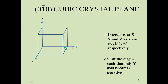Drop the origin to a new position such that the y-axis only becomes negative. When you move from this corner in this direction, this is the negative y-axis direction; this is the positive x-axis direction; and this is the positive z-axis direction. The four corners in the negative y-axis direction are this one, this one, this one, and this one. Join these four corners and you will get the (01̄0) cubic crystal plane.